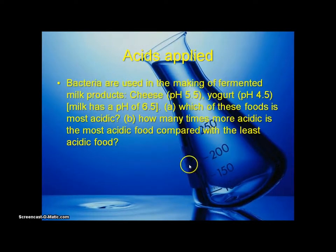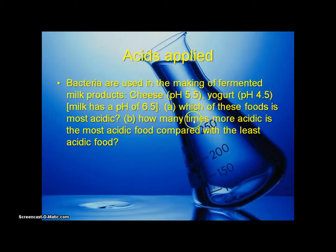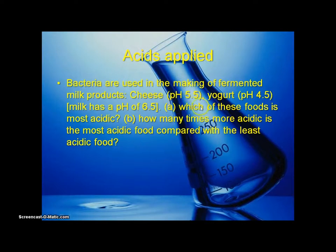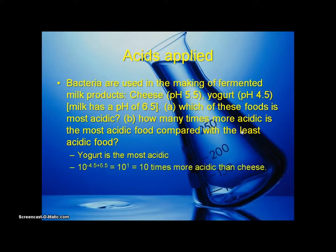Bacteria used in making fermented milk products like cheese and yogurt produce acid. Milk has a pH of 6.5, cheese has a pH of 5.5, and yogurt has a pH of 4.5. Use the pH formula to figure out which food is most acidic and by how many times more acidic the most acidic food is compared to the least acidic. Yogurt is the most acidic because it has the lowest pH.